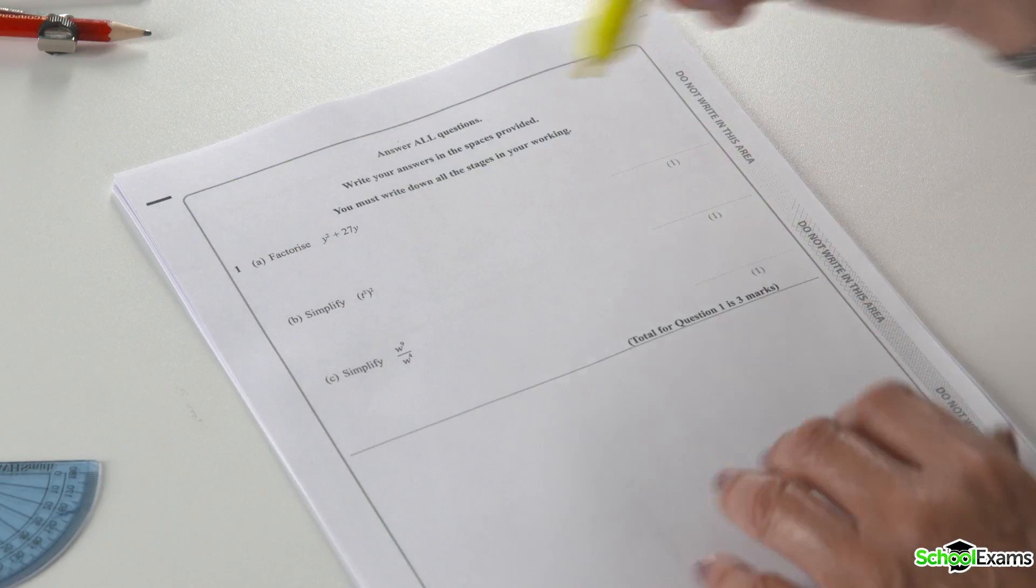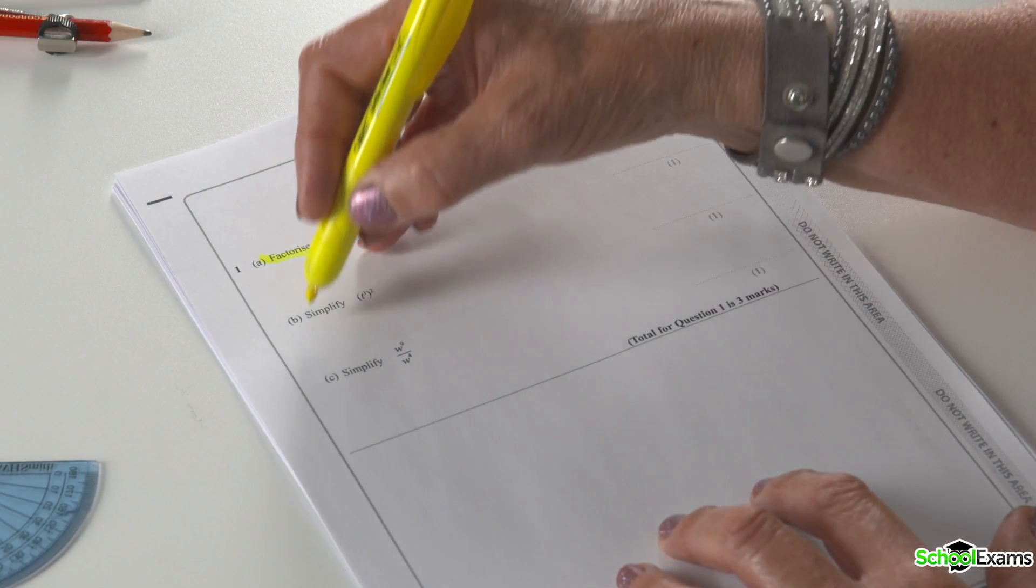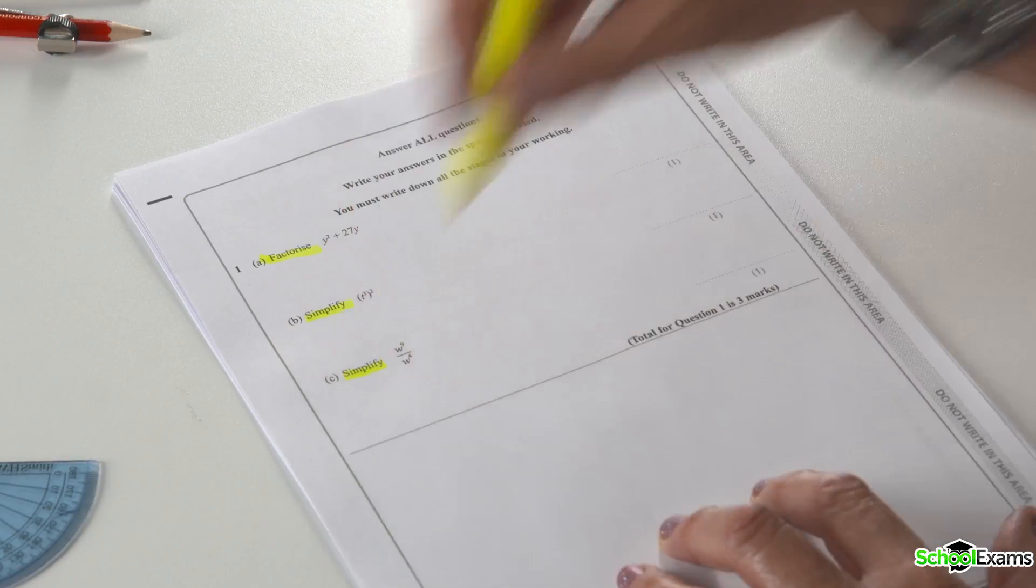Question one. We have three key words here: factorise, simplify and simplify. We're starting straight away with an algebra question.